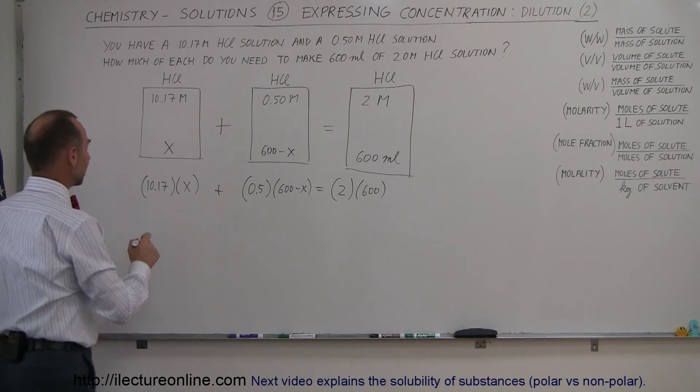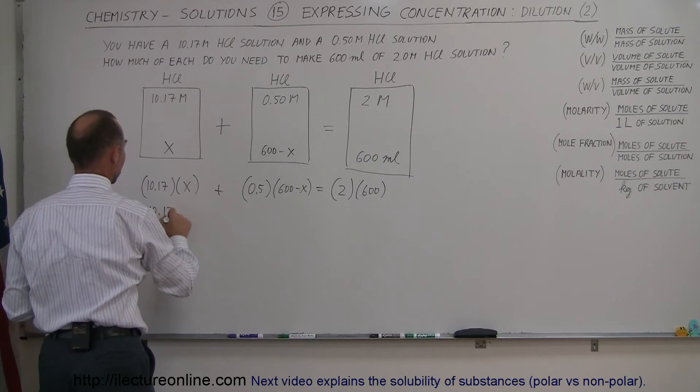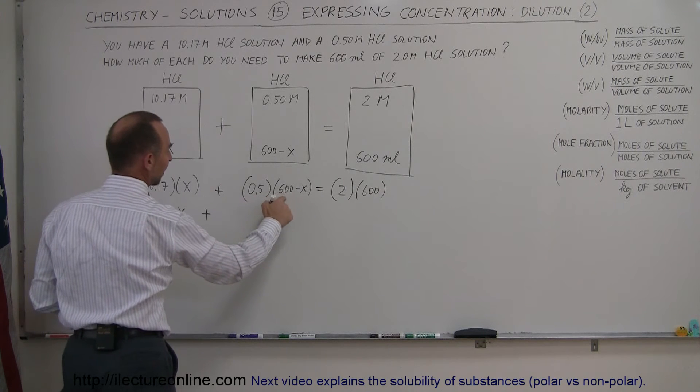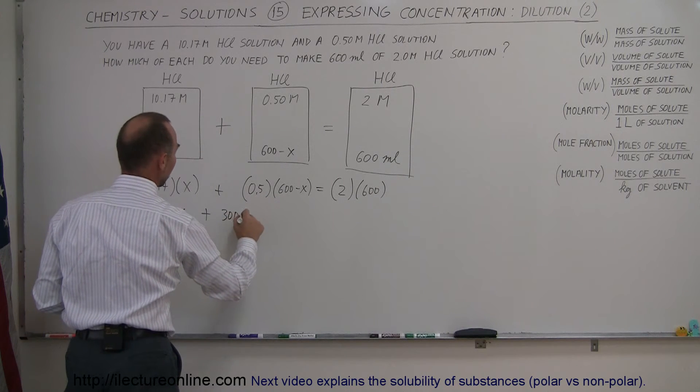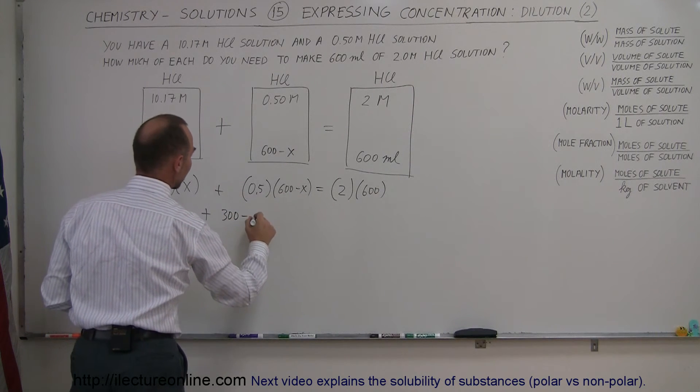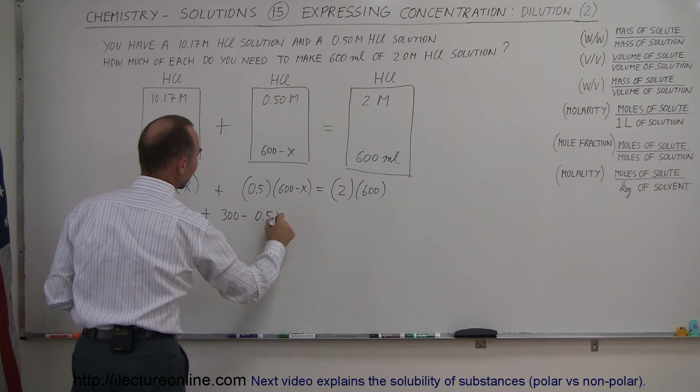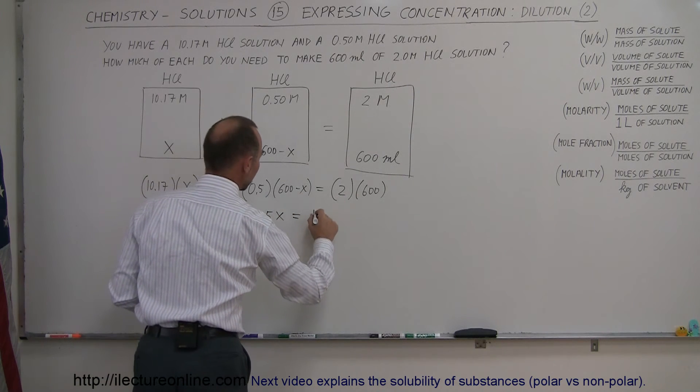Alright, let's multiply things out. So we have 10.17x plus 0.5 times 600 is 300, minus 0.5 times x is minus 0.5x, equals 2 times 600 which is 1200.